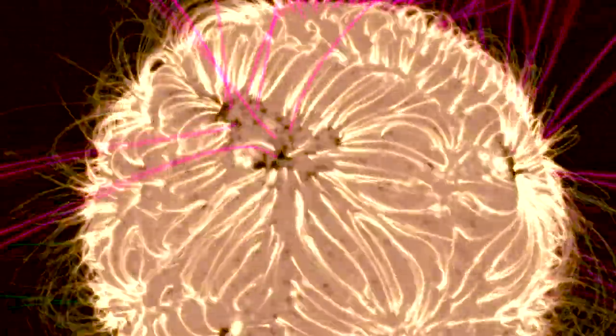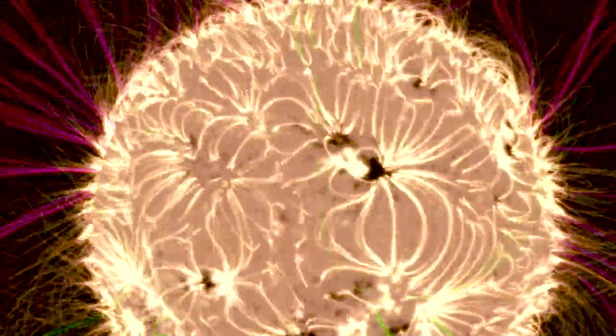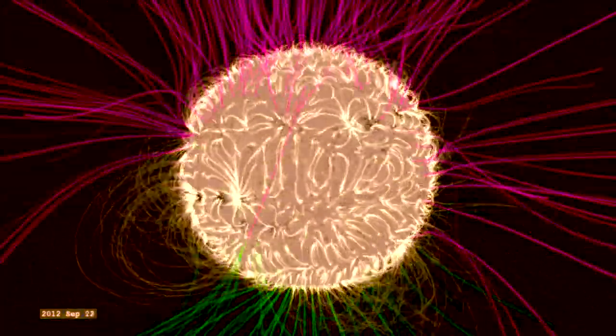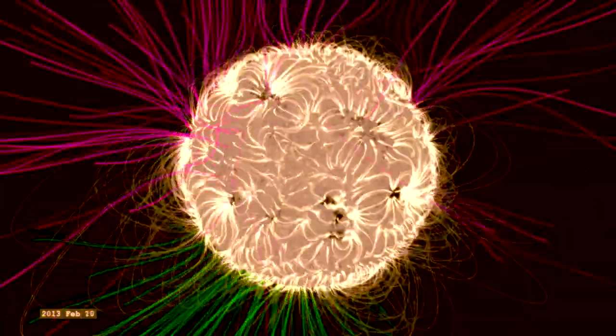Sometimes the sun is quiet, sometimes the magnetic field lines aren't doing a whole lot, but other times you see these bright regions on the sun where you have closed loops, and that's where activity can occur, where the flares can occur. So everything is really magnetically connected.